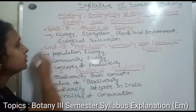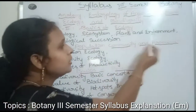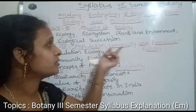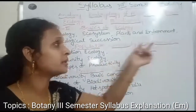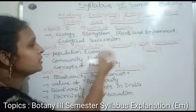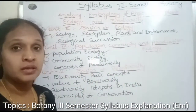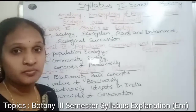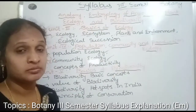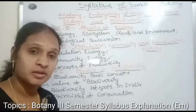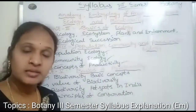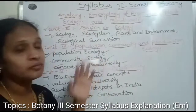Next is Unit 4: Population, Community and Production Ecology. Population, communities, and production ecology are the main topics. Sub-topics include Population Ecology — population formation. Community Ecology — some populations form communities. Ecosystems — different communities form ecosystems. Next is Concept of Productivity — energy flow. These are the sub-topics in the fourth unit.